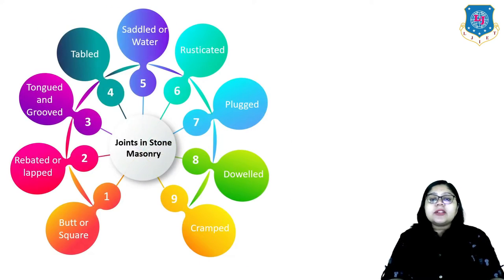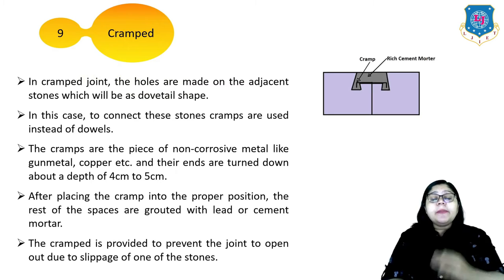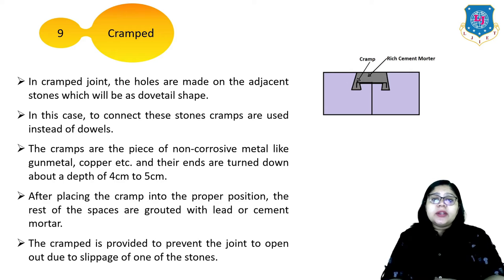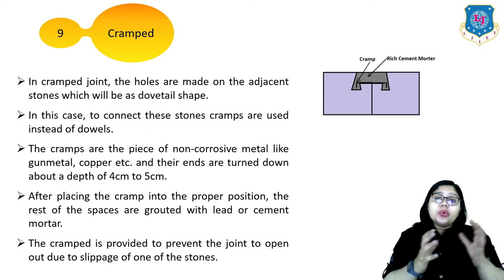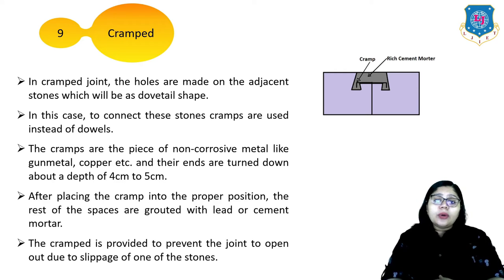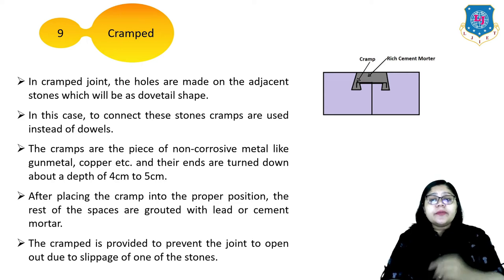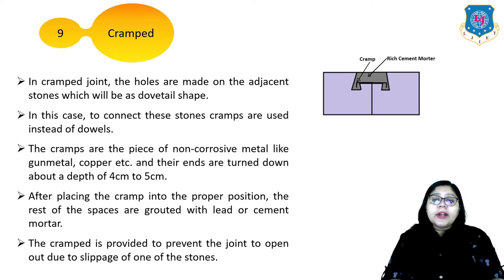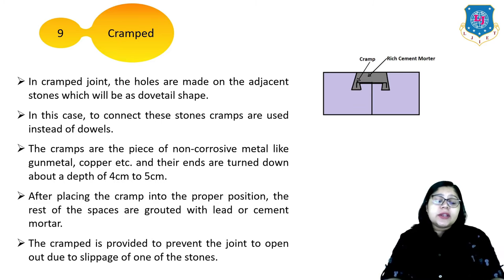The last type is the cramped joint. Holes are made on adjacent stones which are dovetail in shape. To connect these stones, cramps are used instead of dowels. The cramps are pieces of non-corrosive metal like gun metal or copper, and their ends are turned down around 4 to 5 cm deep. After placing the cramp into proper position, the remaining spaces are grouted with lead or cement mortar. The cramp prevents the joint from opening due to slippage of one of the stones.